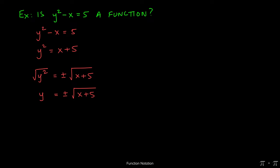This indicates to us that if we were to plug in a single value of x here, say 1, we would end up getting two solutions for y, the square root of 6 and the negative square root of 6.